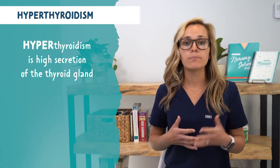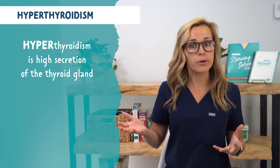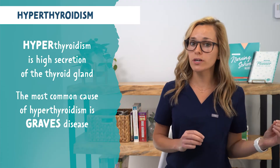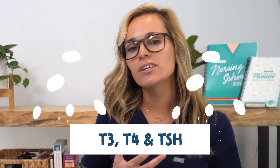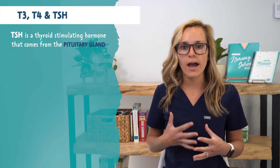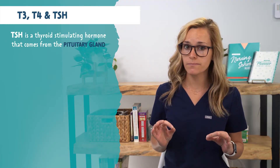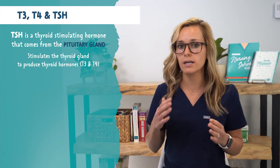Now that we know a little bit more about the thyroid gland, let's talk about hyperthyroidism and what it actually is. Hyperthyroidism, just like the name, is high secretions of thyroid hormone — it's producing more than normal amounts. The most common cause of hyperthyroidism is Graves' disease, which is an autoimmune disease. TSH is thyroid stimulating hormone, which comes from the pituitary gland, not the thyroid gland. It stimulates the thyroid gland to produce thyroid hormone T3 and T4.